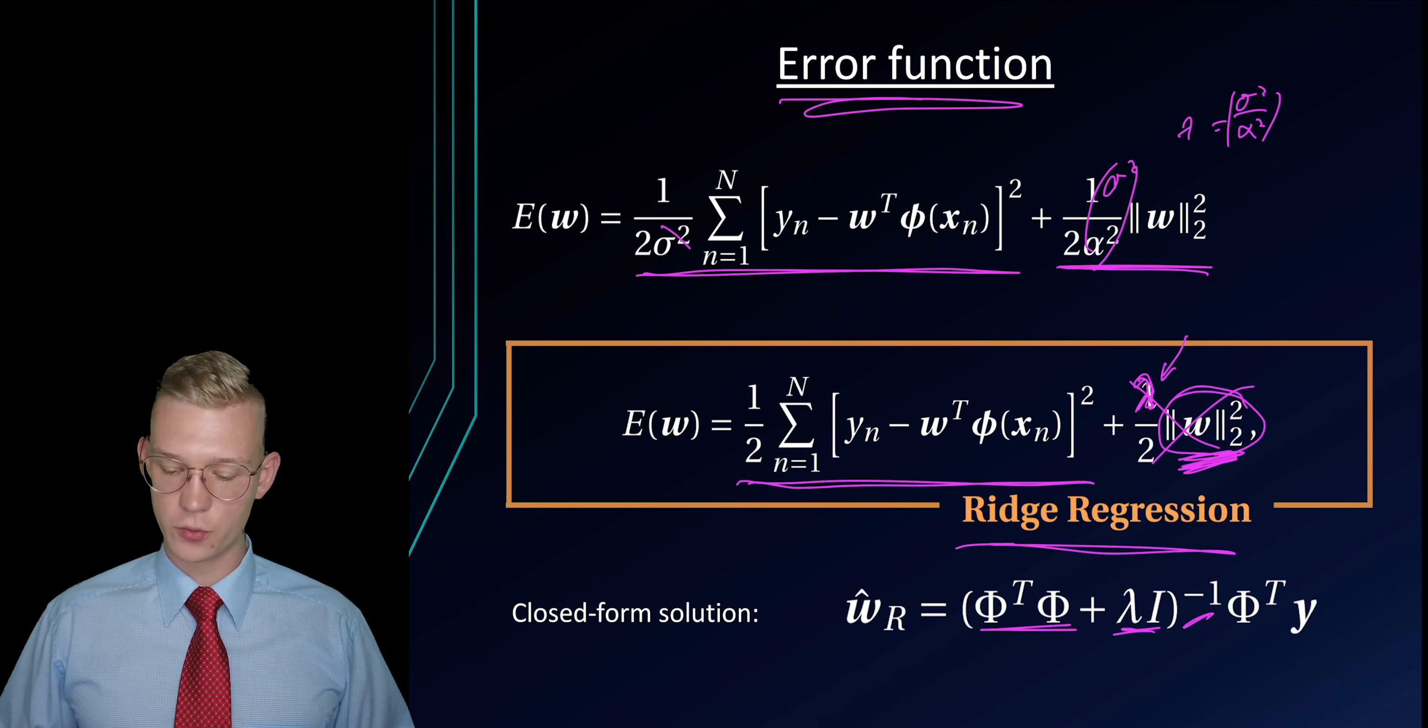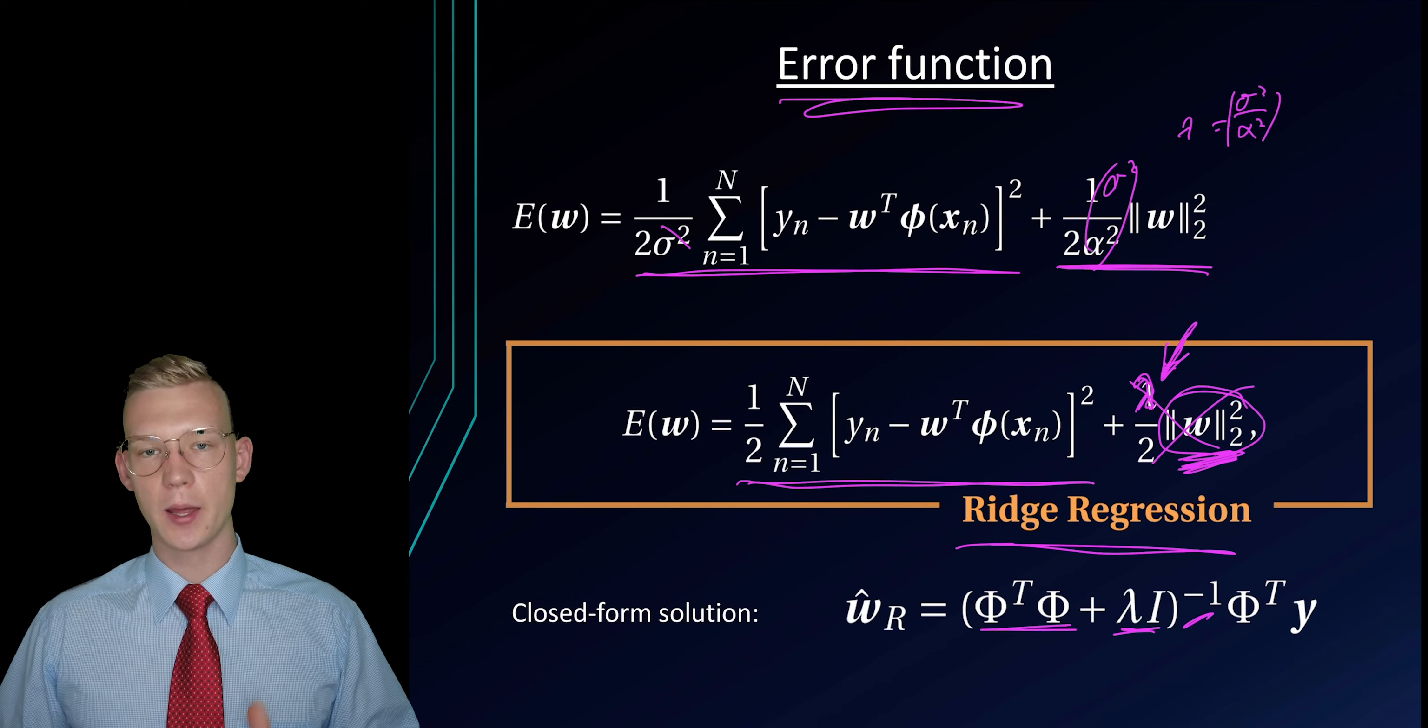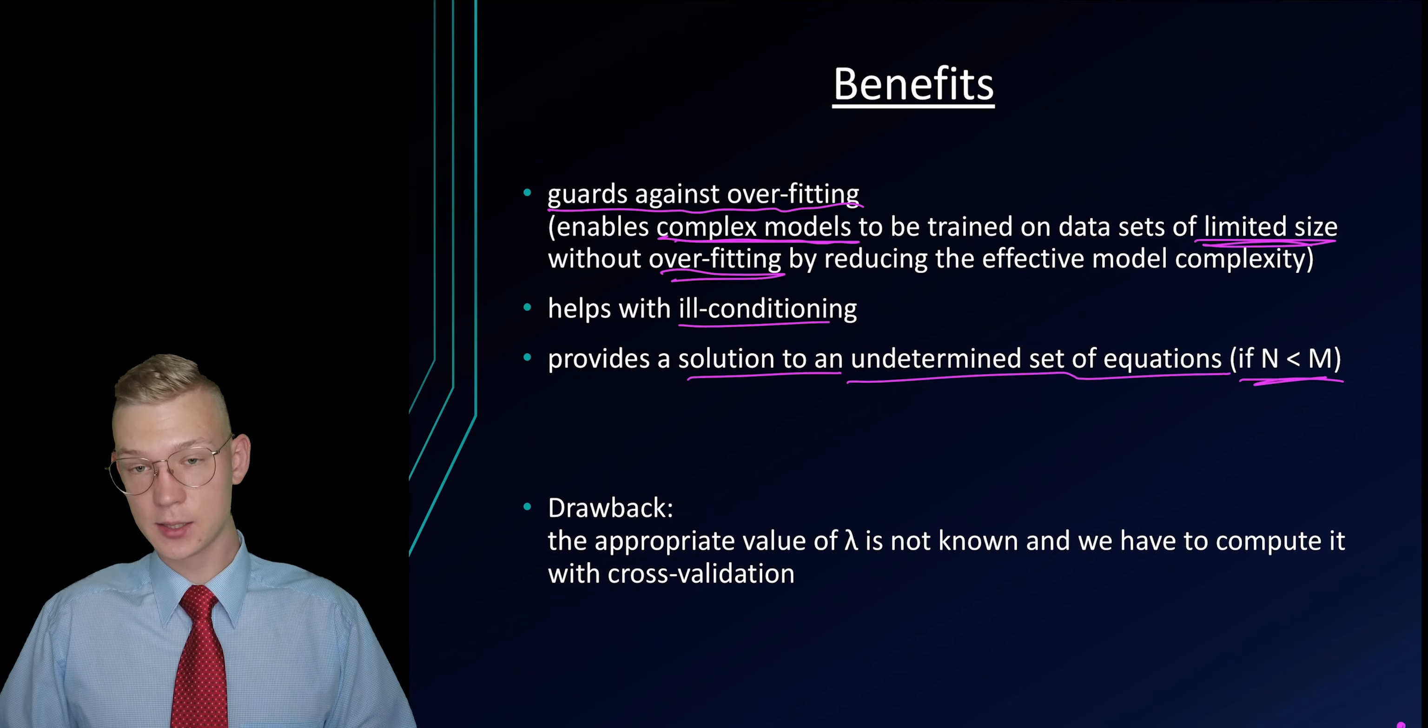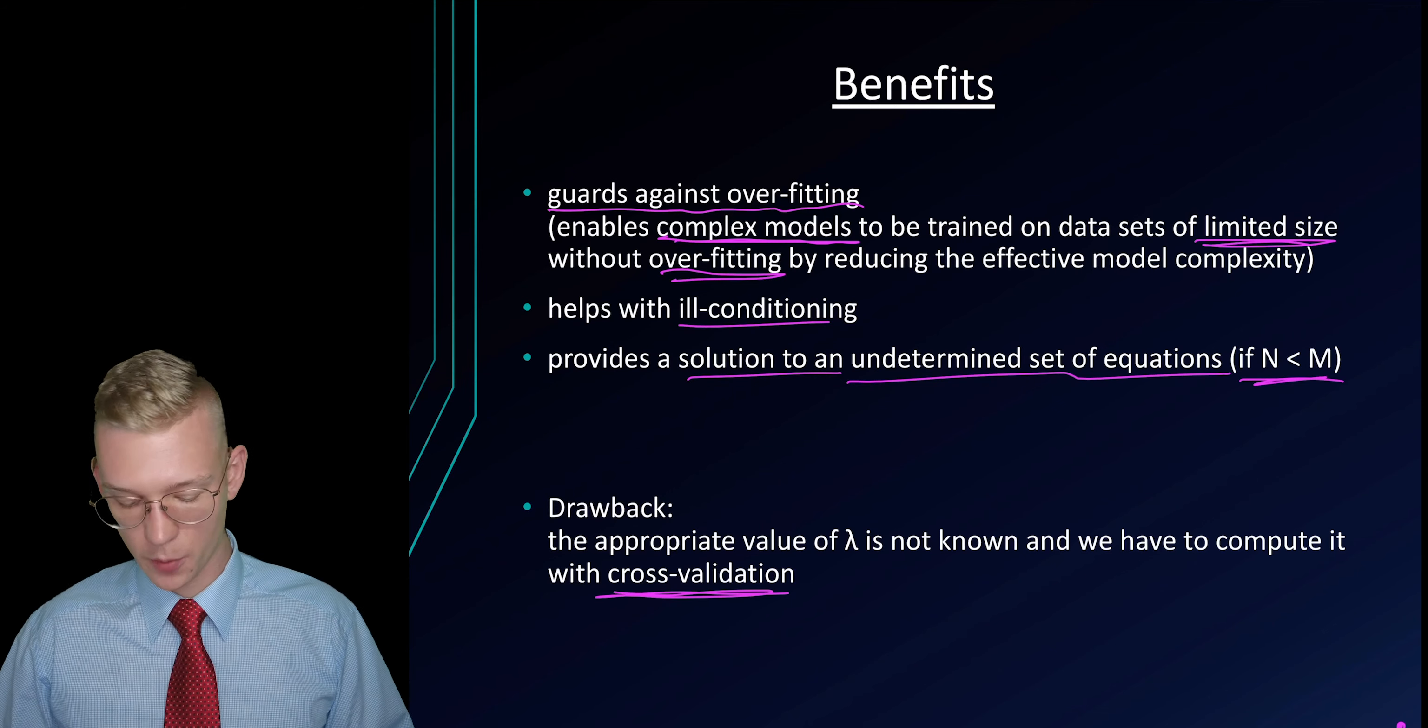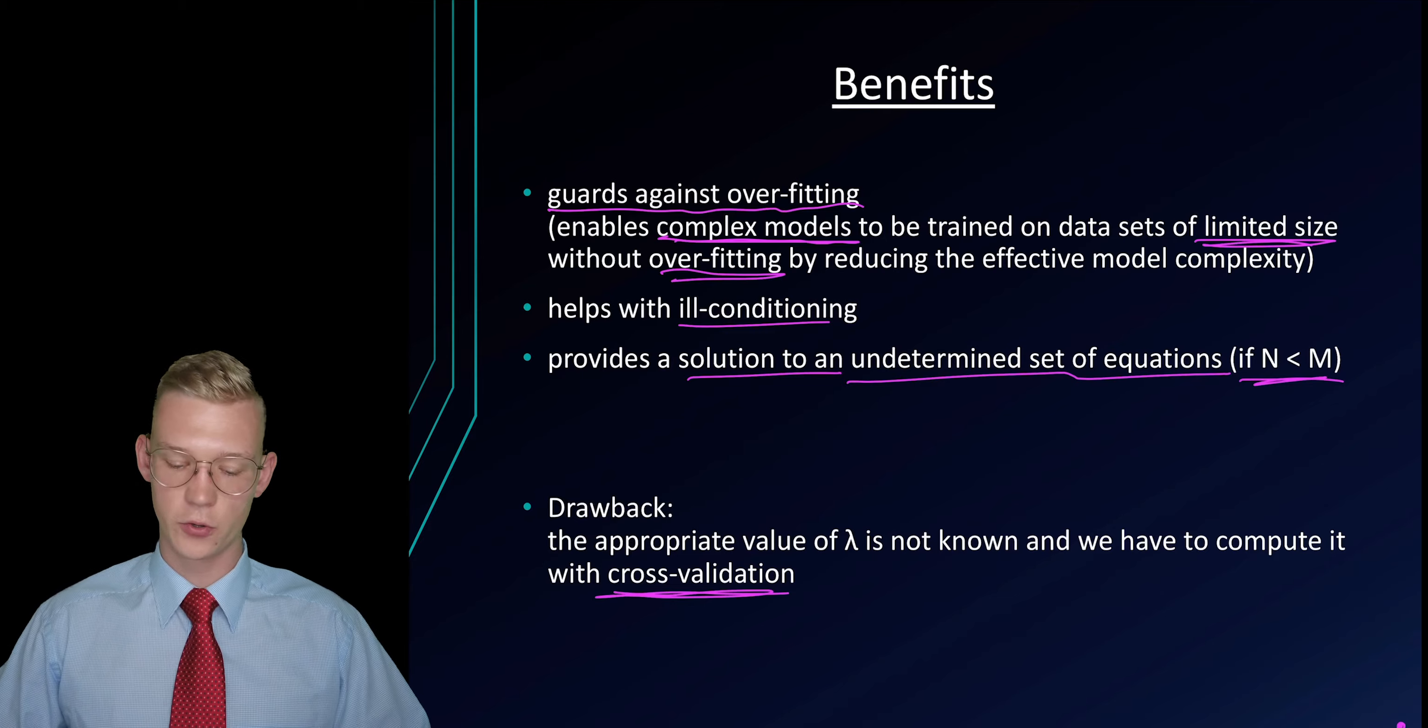The problem of ridge regression is how do we choose this lambda? This lambda has to be either guessed or it could be determined with cross-validation. But this is computationally very expensive.